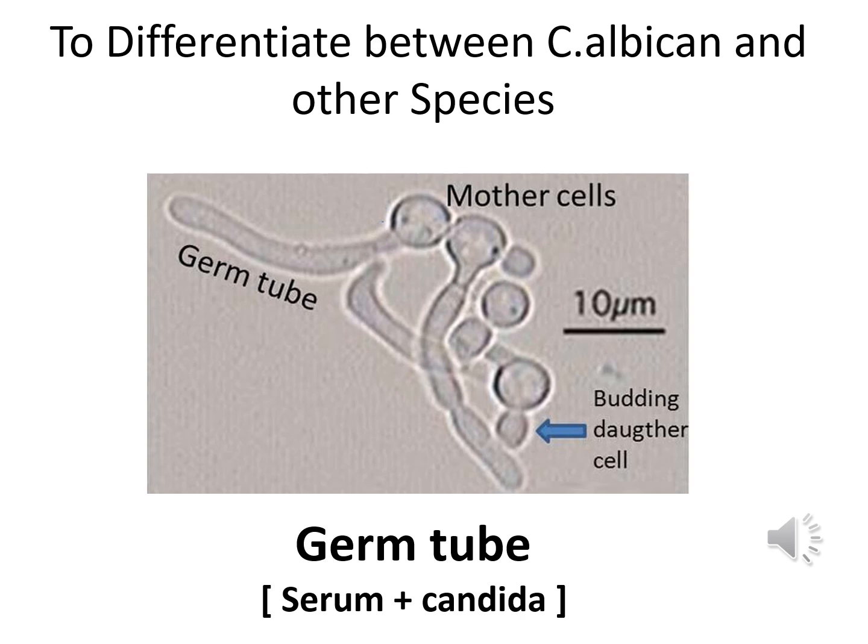The germ tube test is a screening test used to differentiate Candida albicans from other yeasts. When Candida is grown in human or sheep serum at 37°C for 3 hours, they form germ tubes which can be detected with a wet KOH film as filamentous outgrowths extending from yeast cells. This test is positive for Candida albicans.